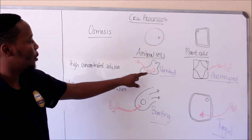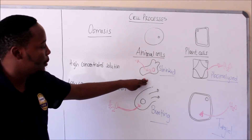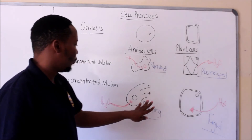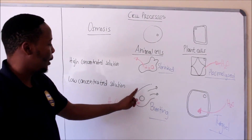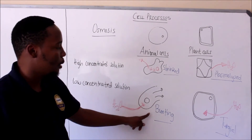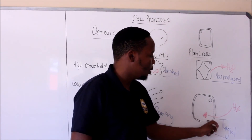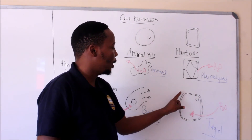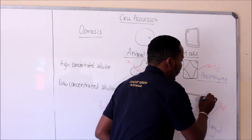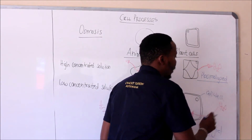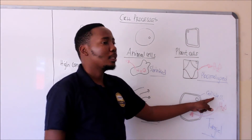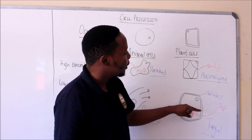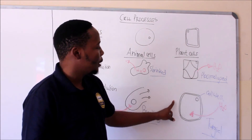Take note: if an animal cell loses water, it becomes shrunken. If a plant cell loses water, it becomes plasmolyzed. If an animal cell gains water, it is going to burst. And if a plant cell gains water, it becomes turgid. The reason we don't see plant cells bursting is because they have a cell wall, which allows them to resist the pressure caused by the turgor pressure inside the cell — but they will just remain turgid.